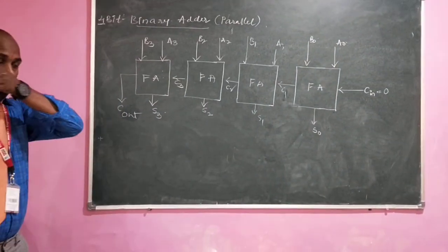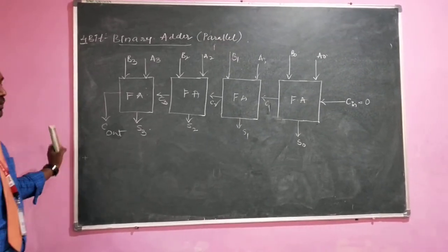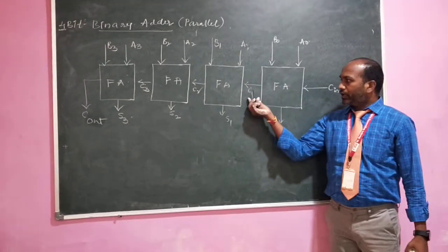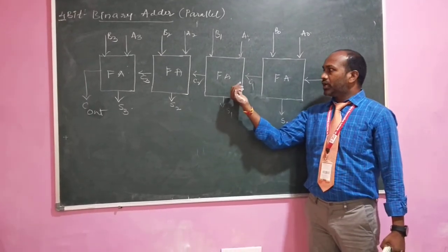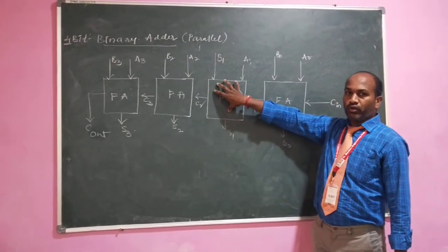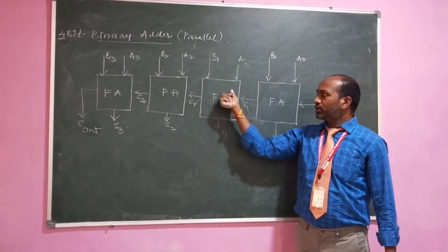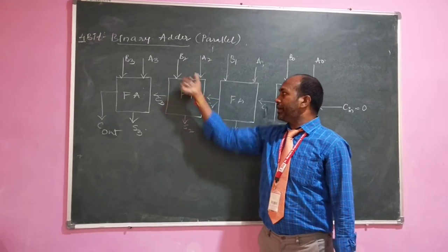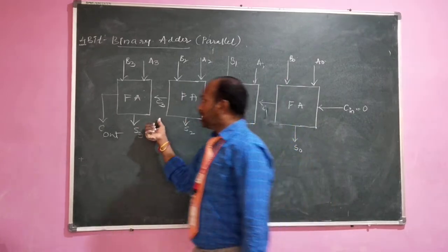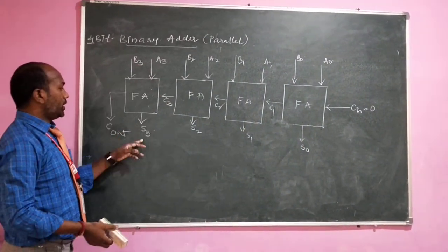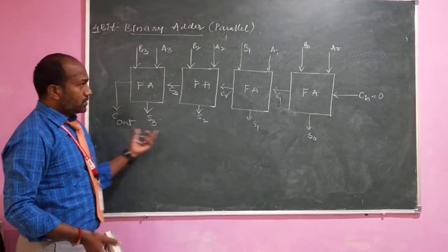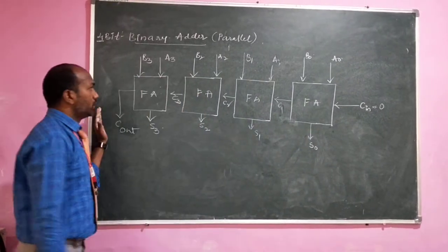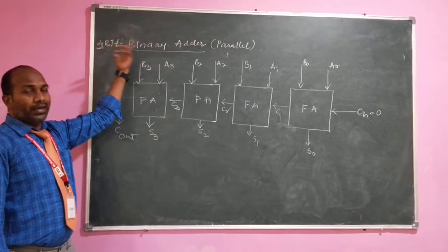This is the 4-bit binary parallel adder, also called a ripple carry adder. It is called a ripple carry adder because the carry propagates from one stage to the next — the input carry is supplied to the first full adder, and the carry C1 generated is then supplied to the next full adder, and so on through all stages.